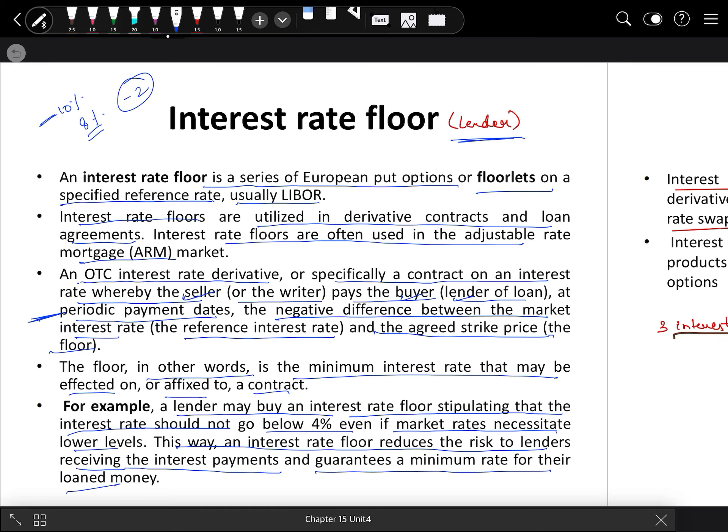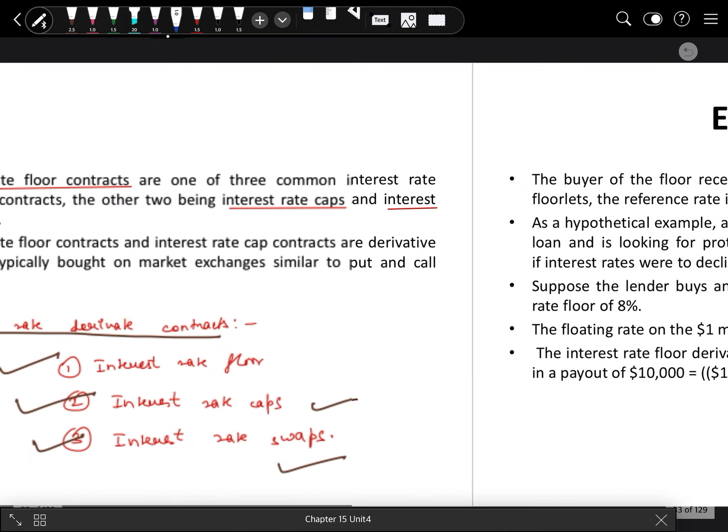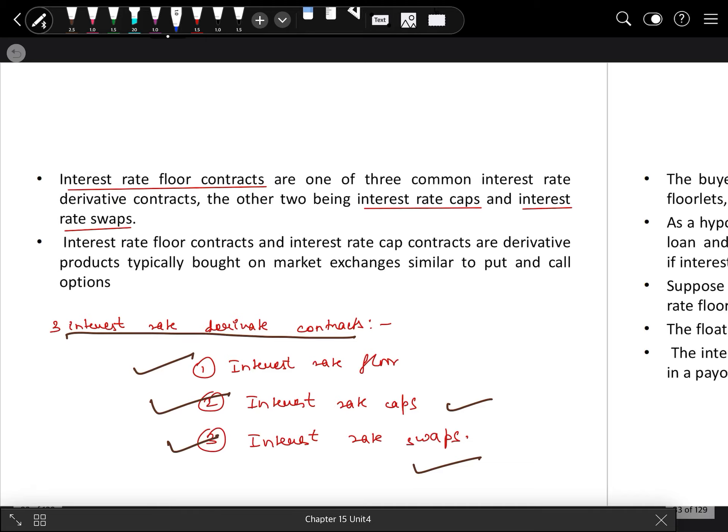Interest rate floor contracts are one of three common interest rate derivative contracts. Interest rate floor contracts and interest rate cap contracts are derivative products typically bought on market exchanges, similar to put and call options, which we discussed in Unit 5, Chapter 11. The floor is for lenders and the cap is for borrowers.